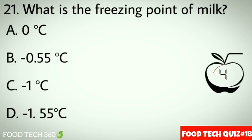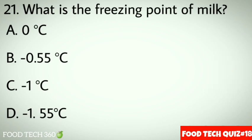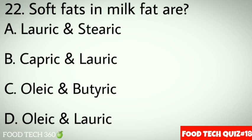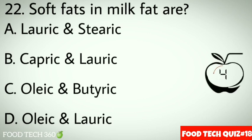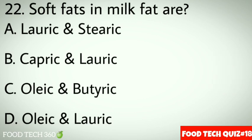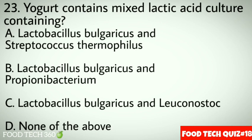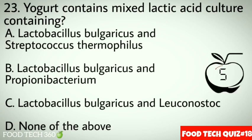Question 20: GHP in food industry stands for. Options: A. Good housekeeping practices, B. Good home keeping practices, C. Good healthy practices, D. Good hygiene practices. Correct answer: D. Good hygiene practices. Question 21: What is the freezing point of milk? Options: A. 0°C, B. Minus 0.55°C, C. Minus 1°C, D. Minus 1.55°C. Correct answer: B. Minus 0.55°C. Question 22: Soft fats in milk fats are dash. Options: A. Lauric and stearic, B. Capric and lauric, C. Oleic and butyric, D. Oleic and lauric. Correct answer: C. Oleic and butyric.